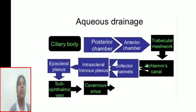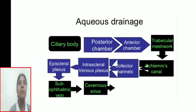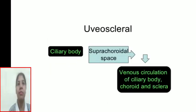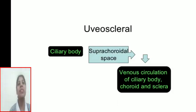Aqueous humor drains from the ciliary body to the posterior chamber, then to the anterior chamber. From there it passes through the trabecular meshwork into Schlemm's canal, then into the collector channels, the intrascleral venous plexus, the episcleral plexus, the ophthalmic vein, and finally the cavernous sinus. The uveal-scleral pathway routes fluid through the suprachoroidal space into the venous circulation of the ciliary body, choroid, and sclera — accounting for about 10% of drainage.